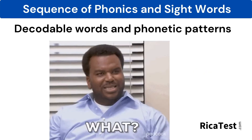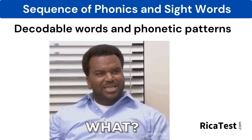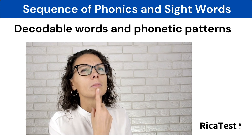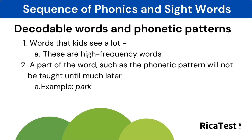We actually teach some words that are decodable as sight words. There are two reasons: number one, words that kids see a lot — these are high frequency words, so kids need to learn how to read them early on. And number two, a part of the word, such as the phonetic pattern, will not be taught until much later. An example of this could be the word park, where the R-controlled vowel pattern won't be taught until first grade or even second grade, but the child will oftentimes want to use this word.